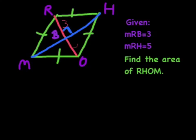And in a rhombus, you should know that the diagonals bisect each other because it's a parallelogram. RH is 5. And so that actually means all of the sides are going to be 5.